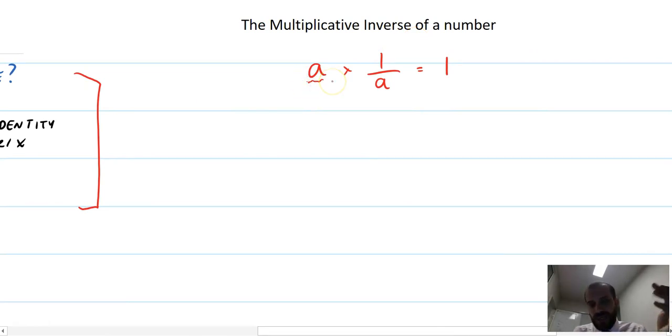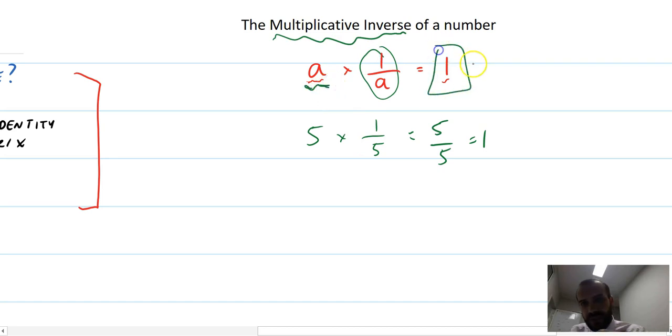I've got some number, let's call it A. If I multiply it by 1 on A, the answer will be A over A, and anything over anything is equal to the number 1. For instance, if I had the number 5 and I multiply it by its multiplicative inverse, which is 1 over 5, then the answer will be 5 over 5, which is equal to 1.